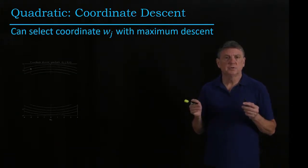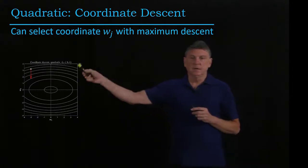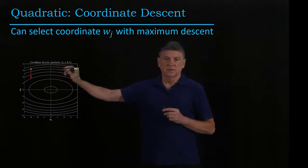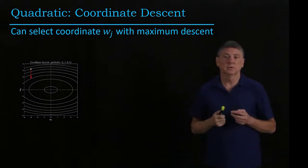If we wanted to use a different method, we could do something called coordinate descent. And that would be picking either the w1 direction or the w2 direction, depending on which one provides us with the greatest improvement locally.